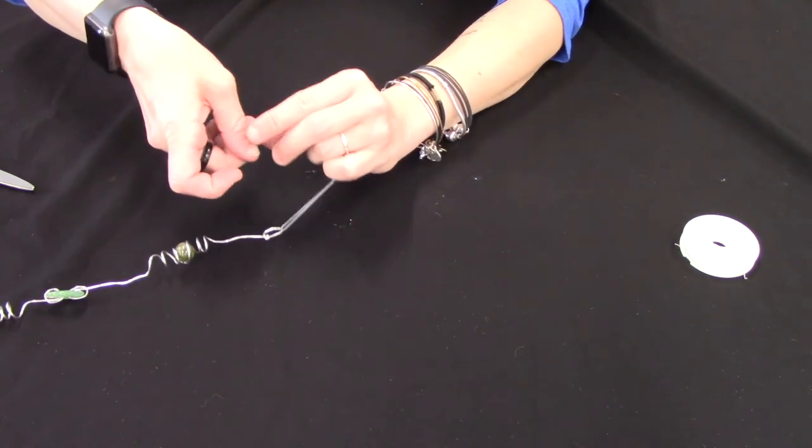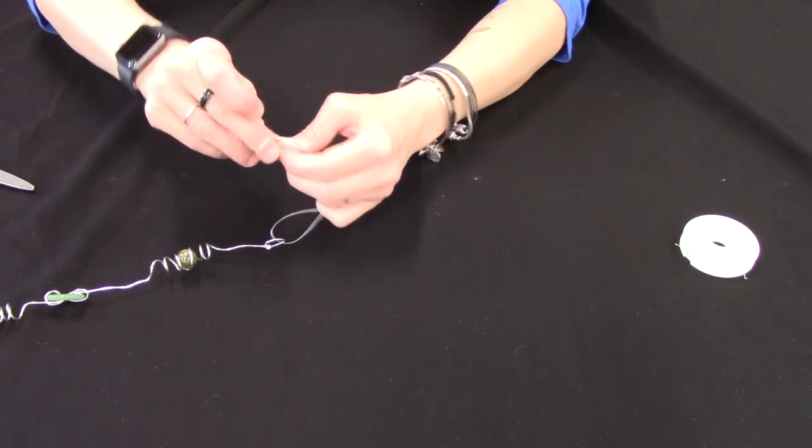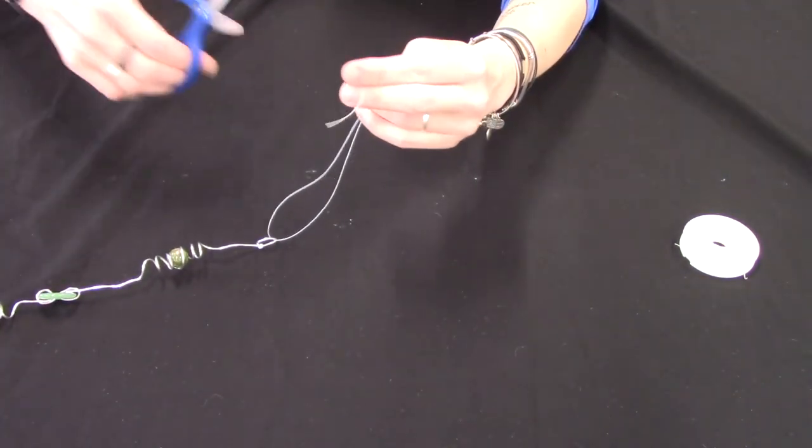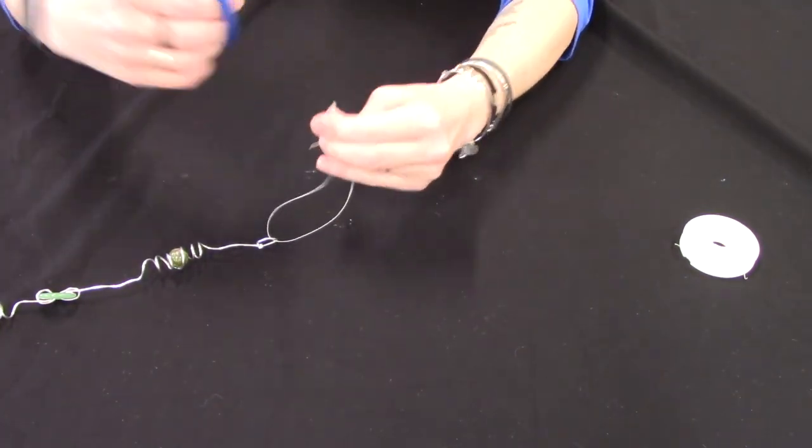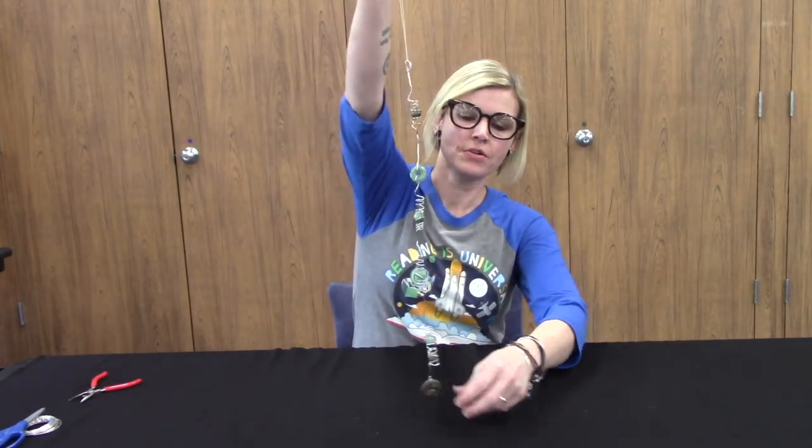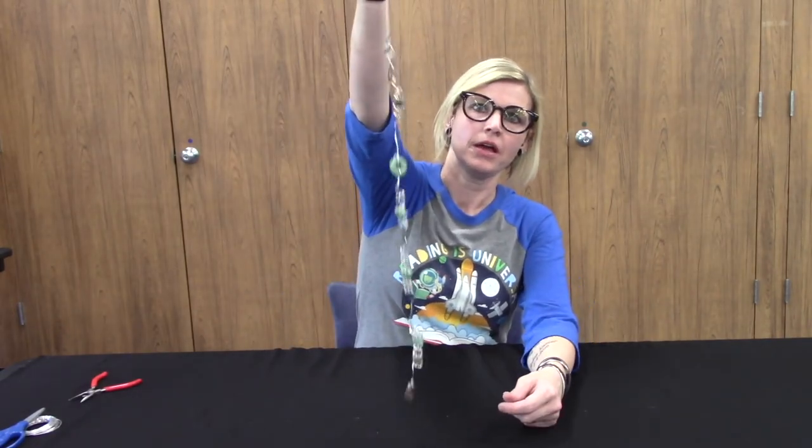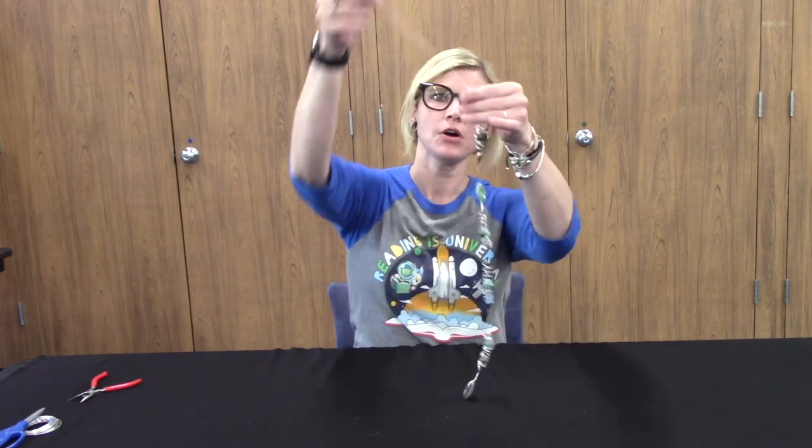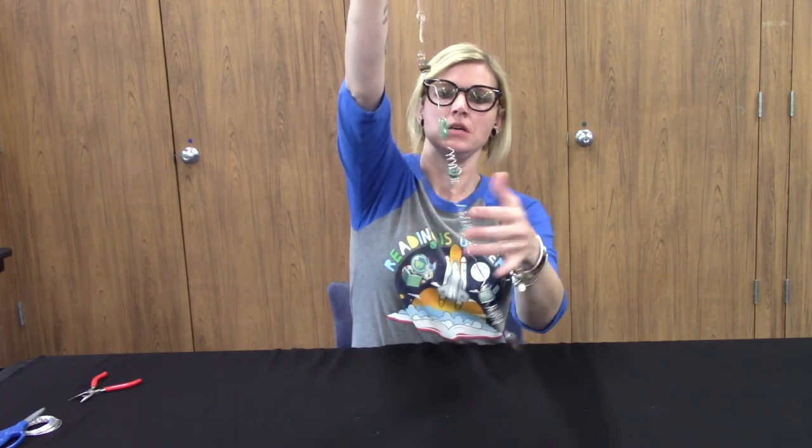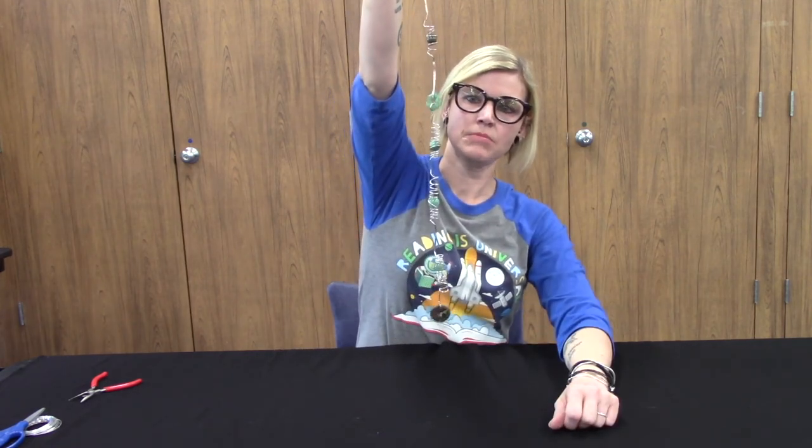And then we're going to take our fishing line and we're going to tie that to the end. Okay, so here it is, our garden wind spinner. And remember that the longer your fishing line on the end, the more it's going to spin in the wind. And I think I'm going to hang this in my garden.